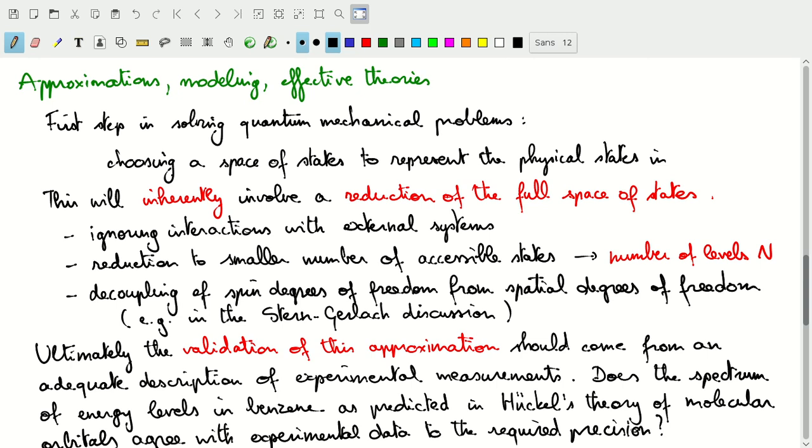Inherently, we'll have to model our system by reducing the full space of states. I mean, the full space of states is the Hilbert space corresponding with the entire universe. Of course, we want to consider just the system that we're interested in, so we'll ignore interactions with external systems.